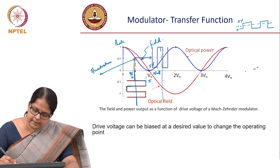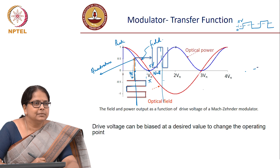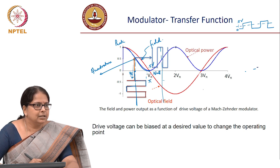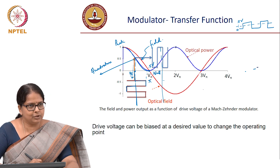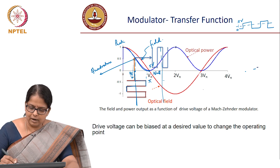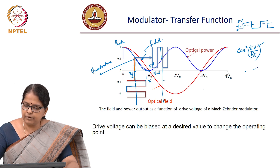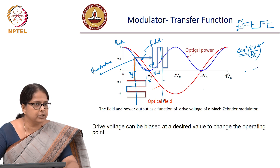Should you actually do exactly Vπ? You see, this is a cos-squared function — cos squared of π times V over Vπ — which means it is a non-linear transfer function. So your output power is cos squared of π·V/Vπ, meaning your output is becoming a non-linear function of the input.